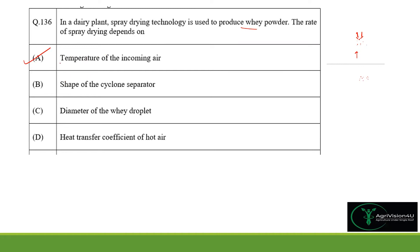The shape of the cyclone separator would not affect the rate of spray drying because it is only used to separate particles based on size after drying. So option B is not the right answer. The diameter of the whey droplet would definitely affect the drying rate. This is also an MSQ question of one mark.